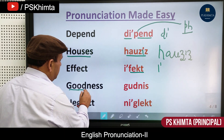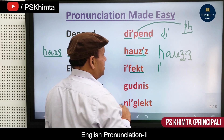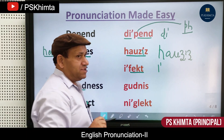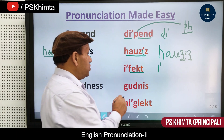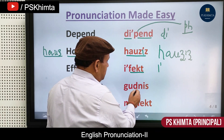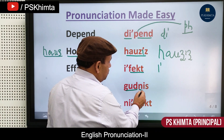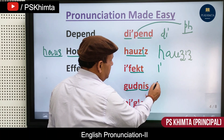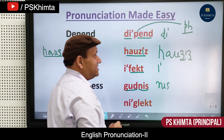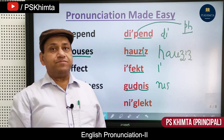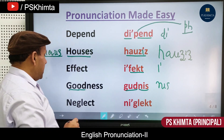Next is 'goodness.' We say 'goodness,' but the correct pronunciation is 'good-ness' — clearly pronounce the 'ness' suffix: goodness.